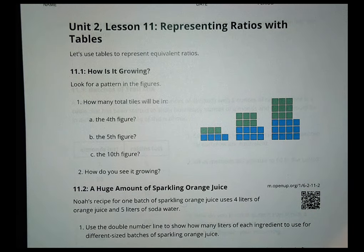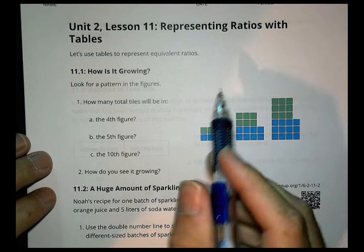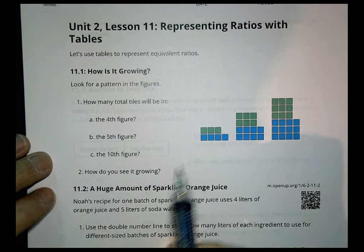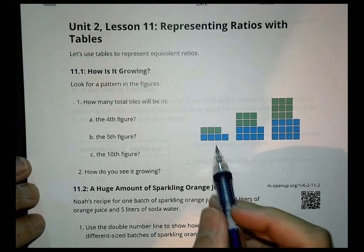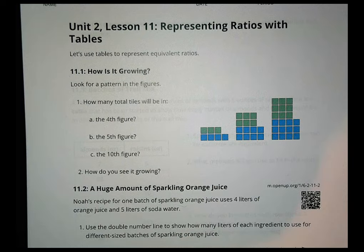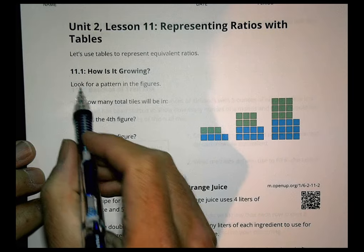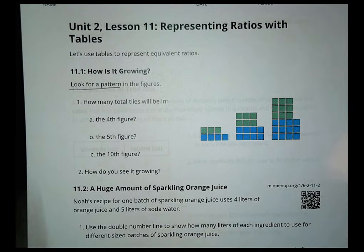Hi there, this is Math 6, Unit 2, Lesson 11: Representing Ratios with Tables. First of all, we're going to look at this first set of patterns here, and we have some blue squares and some green squares, and it wants us to look for a pattern in that figure.